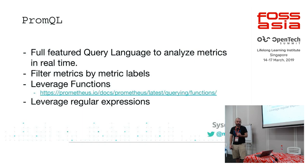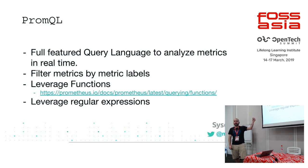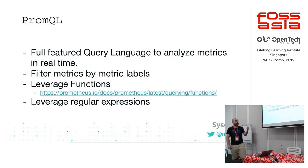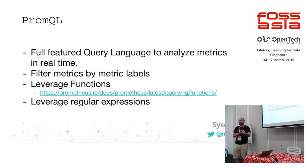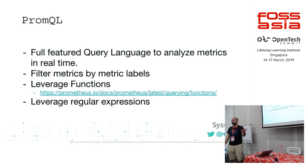PromQL is a full-featured query language that allows you to analyze metrics in real time. You can filter metrics by labels, use functions like averages, standard deviations, square roots, and logarithms. You can smooth things out using deltas. It also automatically creates histograms for you just by leveraging this query language, so the data you get back isn't raw metric data but instead a histogram with bucketing already done.